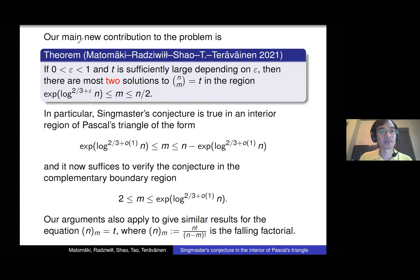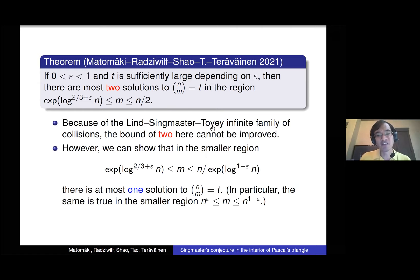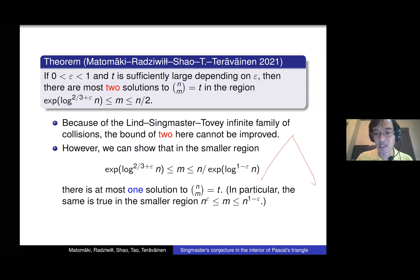The bound of two is completely sharp because we have this infinite family of collisions in this region — we can get two solutions but not three. There's also a variant: if you place a slight upper bound on m, improving the upper bound on m, then you only get one solution. So in one region there are two solutions, and in a subregion there is only one solution.